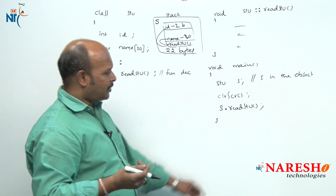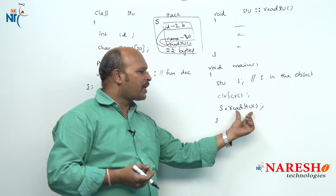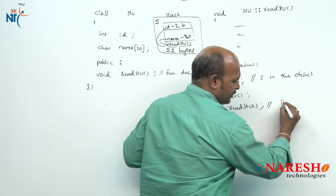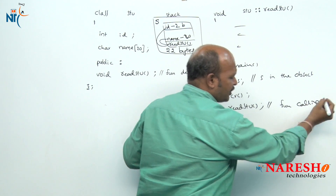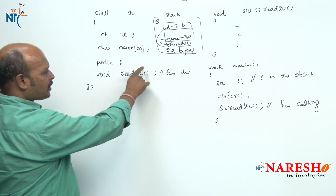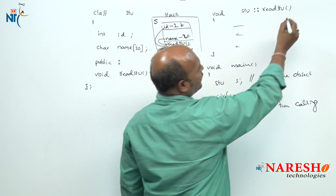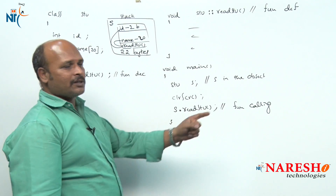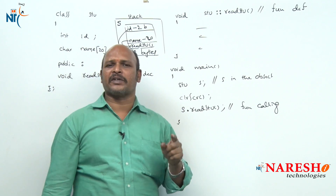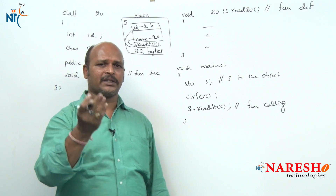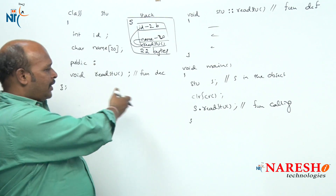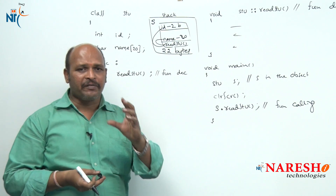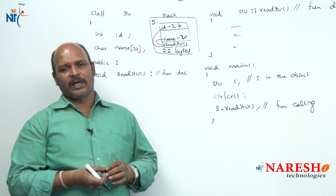The dot indicates that readStudent is a member of the S object, so this part is called the function calling. To summarize: every function has three parts — function declaration, function calling, and function definition — and all three have been covered. This is how to call member functions and how to define a class. Thank you for watching.